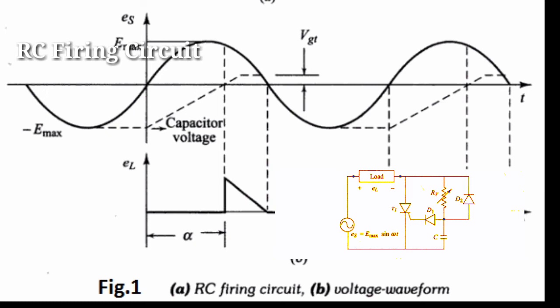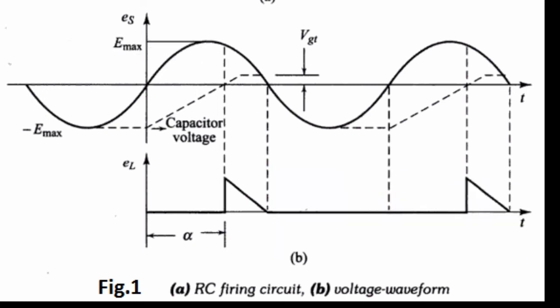And after this, the capacitor holds to a small positive voltage as shown in figure. During negative half cycle, the diode D1 prevents the breakdown of the gate to cathode junction.